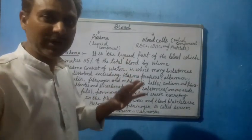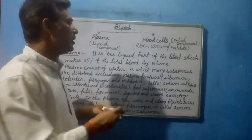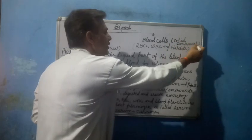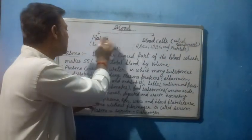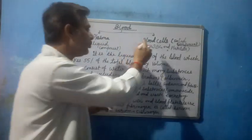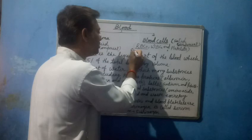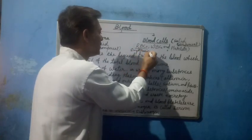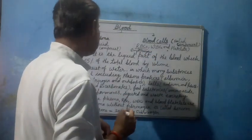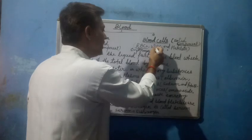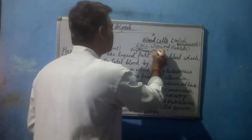There are two components of the blood. One is the liquid component and the second is the solid component. The liquid component is the blood plasma, whereas the solid component is the blood cells. The blood cells are divided into three parts: the RBC, also called erythrocytes; the WBC, also called leukocytes; and the blood platelets, also called thrombocytes.